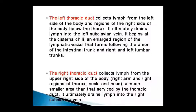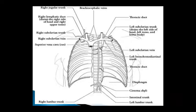The right thoracic duct collects lymph from the upper right-hand side — specifically the right arm, the right region, the neck, and the head. This is a much smaller area than that serviced by the thoracic duct. The right thoracic duct ultimately drains the lymph into the right subclavian vein.